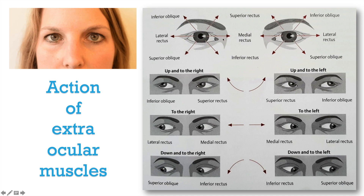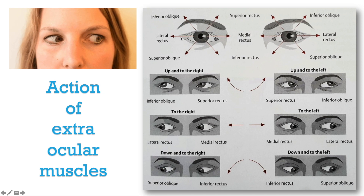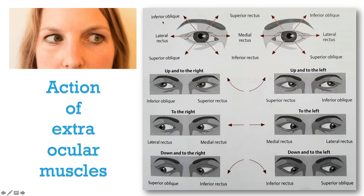Remember that there is some role of superior rectus and inferior rectus as well in adduction of the eyeballs. Now looking outwards laterally — lateral deviation, temporal deviation, or abduction of the eyeballs — when you move your eyeballs laterally outwards, that action is mainly performed by the lateral rectus of both eyes. There is also some role in outward movements by inferior oblique and superior oblique. These two muscles also help in slight lateral movement of the eyeball.